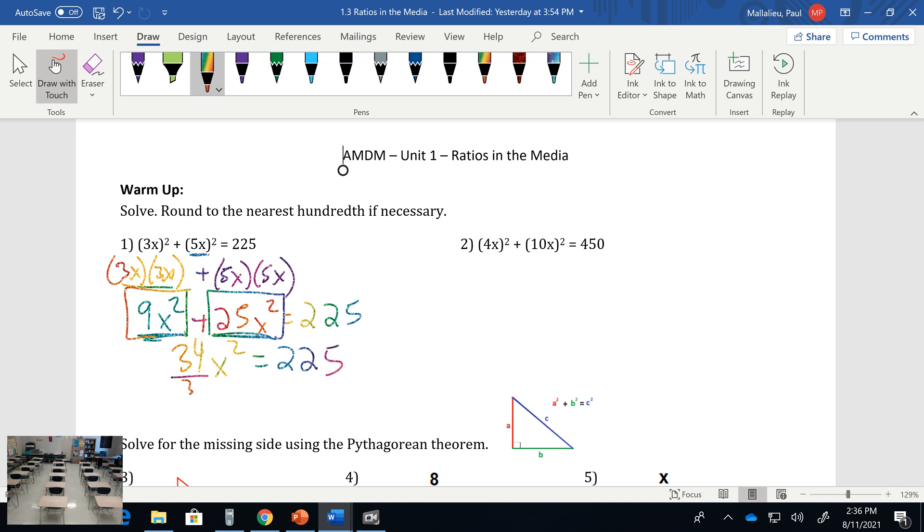If we're trying to get our x² by itself, we've got to divide by 34, so x² equals 6.25. To get our x by itself we've got to square root both sides, which leaves us with x equals 2.57.